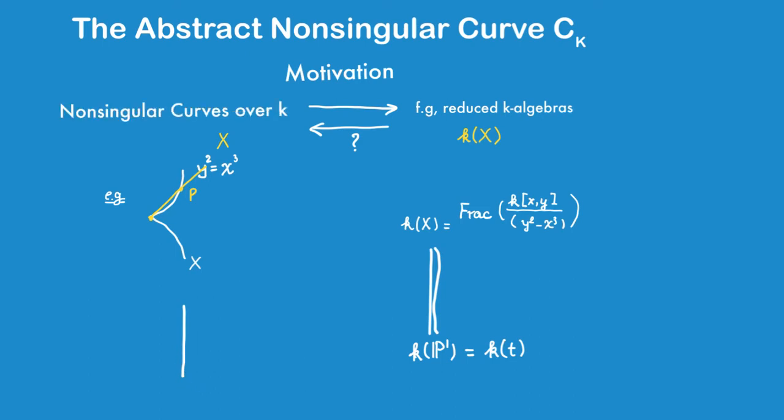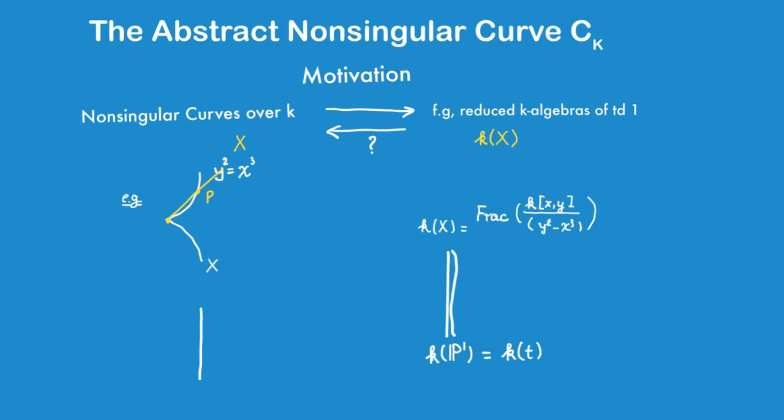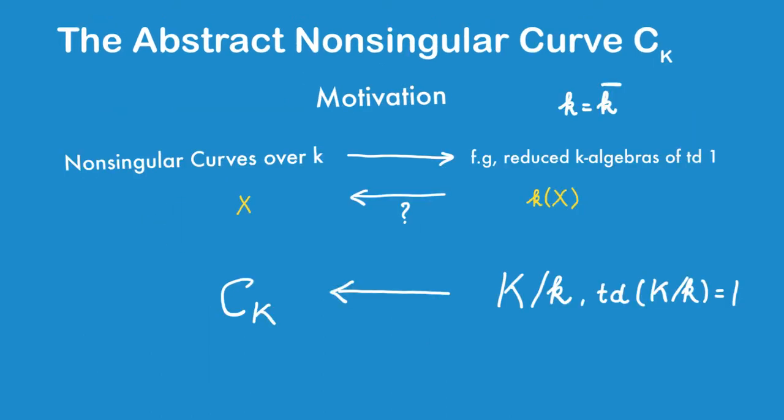However, if we restrict only to non-singular curves, then it's indeed possible to recover the variety from the function field. In other words, the function field of non-singular curves determine the curve uniquely, up to isomorphism. Observe that this example does not apply, because this curve here is not non-singular, and that was the only obstruction.